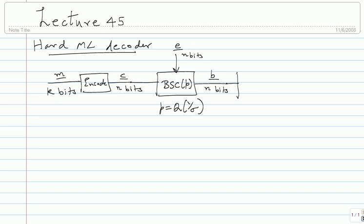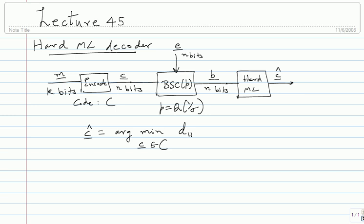A hard ML decoder outputs c-hat given by the argument of minimum over c in the code C of the Hamming distance between b and c. So from the received vector, look at all the codewords, find the Hamming distance, and pick the one closest in Hamming distance. If there is more than one, you can pick any — it doesn't change the probability. This is the ML rule; it minimizes the probability of error and you can't do anything better.